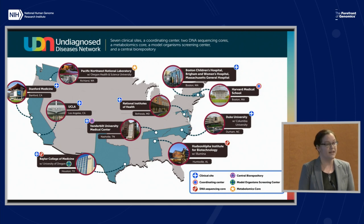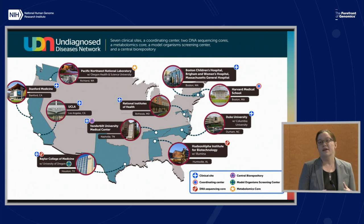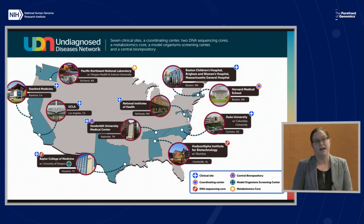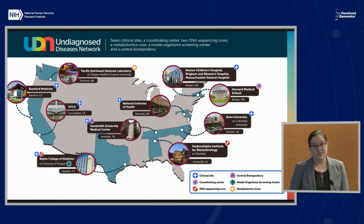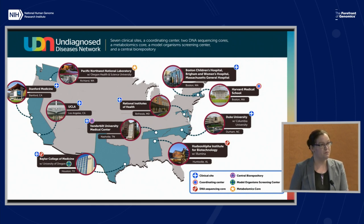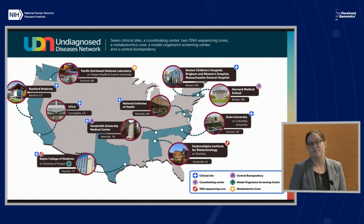These are all of the sites that make up the Undiagnosed Diseases Network. We started with a coordinating center that provides the infrastructure and gateway for all applications. We have seven clinical sites across the country, including the site at the NIH. We also have two sequencing cores — one providing exomes and one providing genomes — a model organism screening center providing Drosophila and zebrafish modeling, a metabolomics core providing untargeted metabolomics analyses, and a central biorepository.